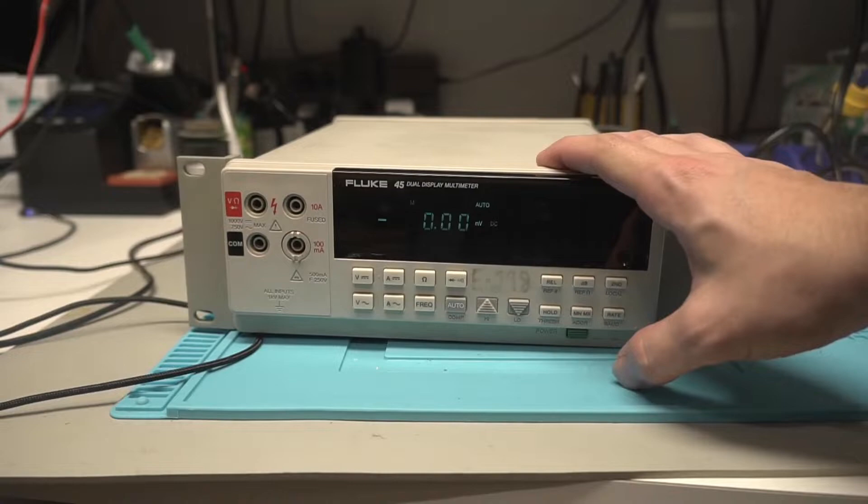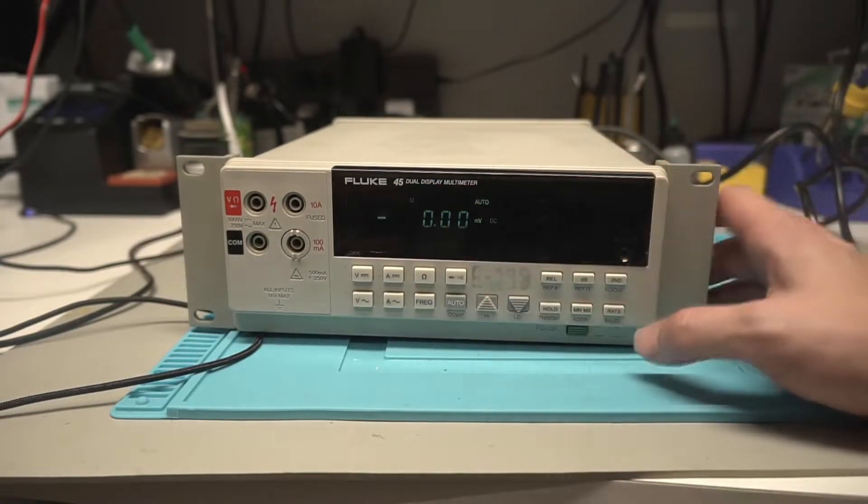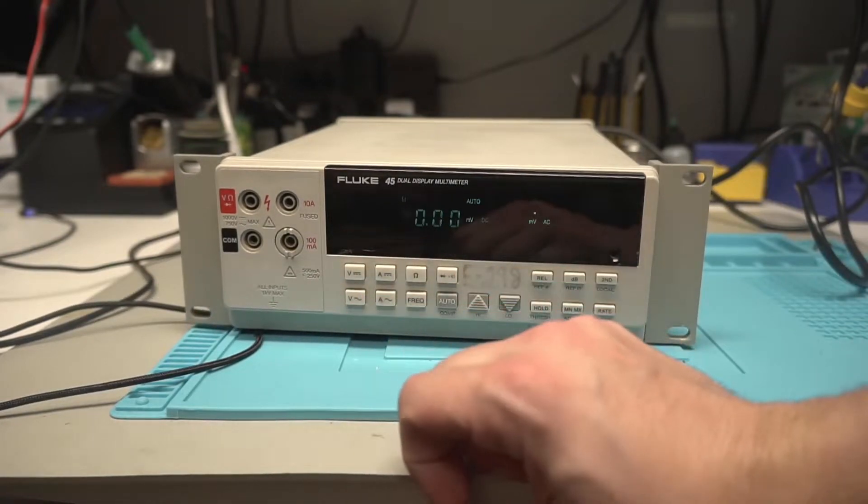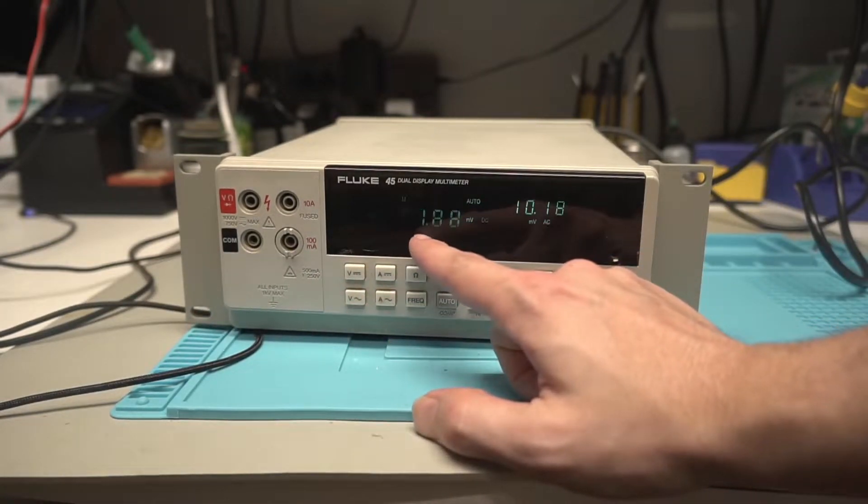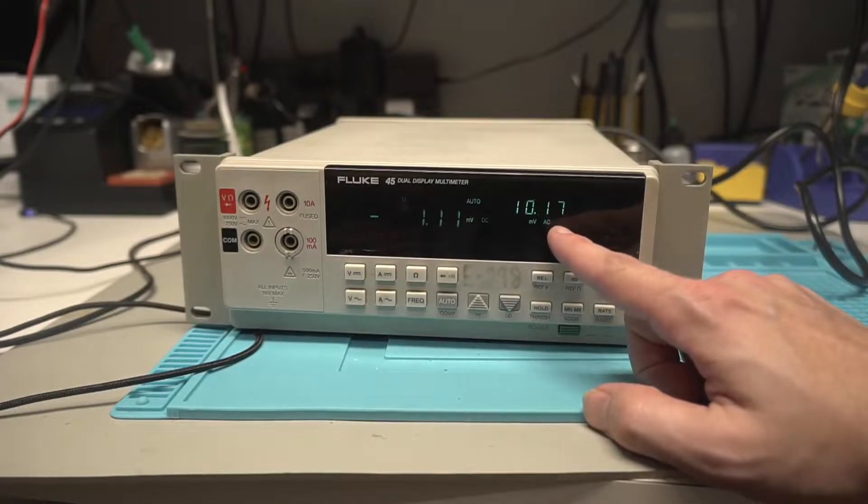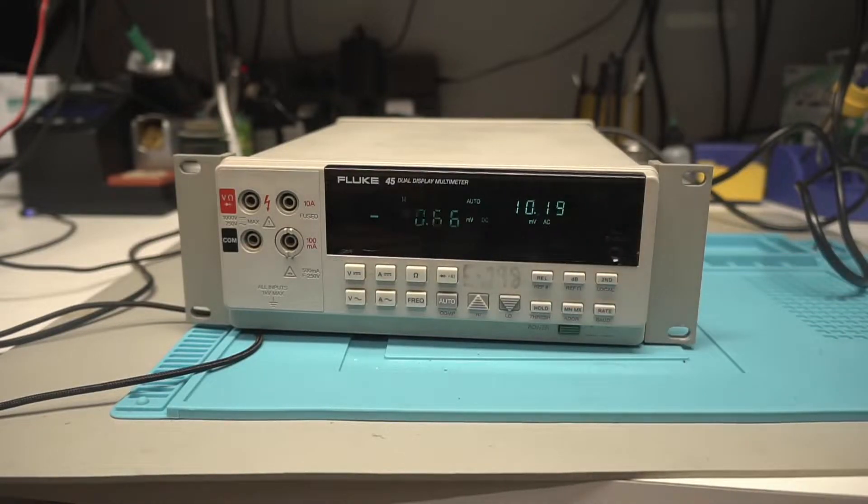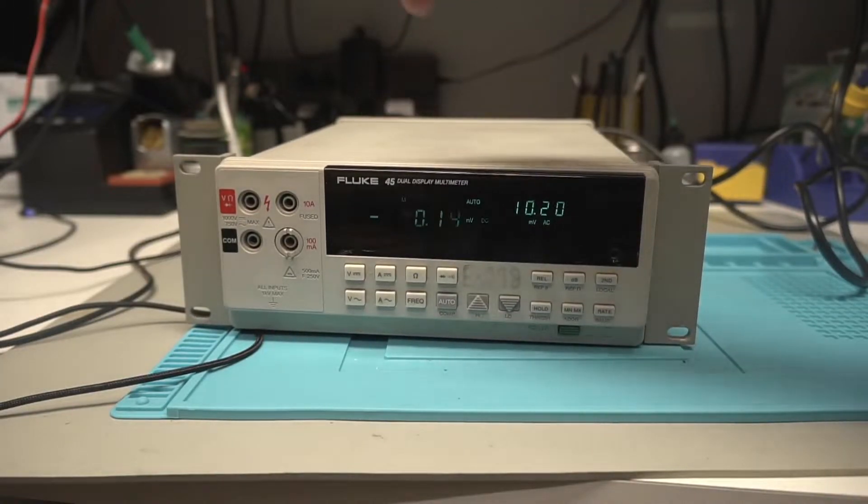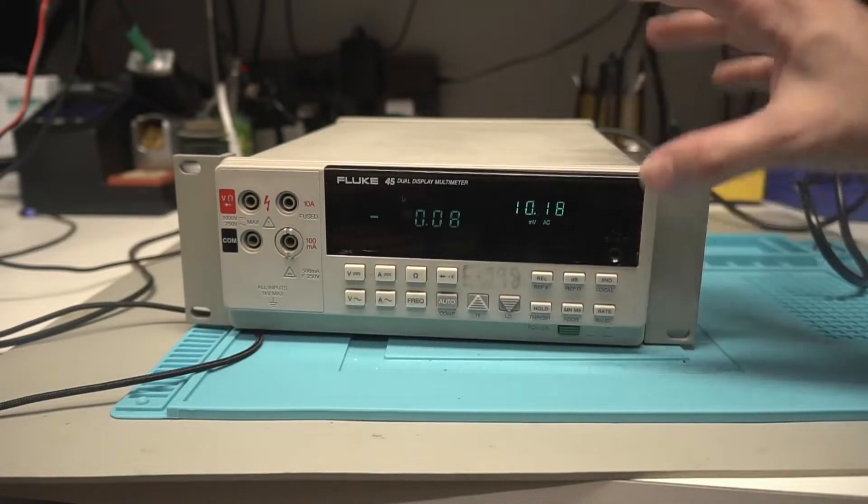So a couple of cool features is that this is a dual display multimeter, which means I can hit second and then I can hit volts AC. And now I have my DC volts with my AC reading here, which will let me read the ripple. So as you can tell, the second screen is brighter than the first screen.